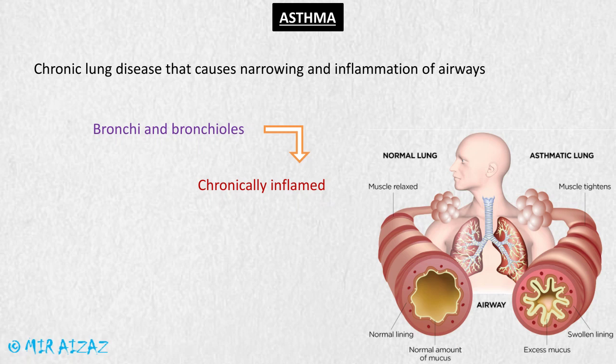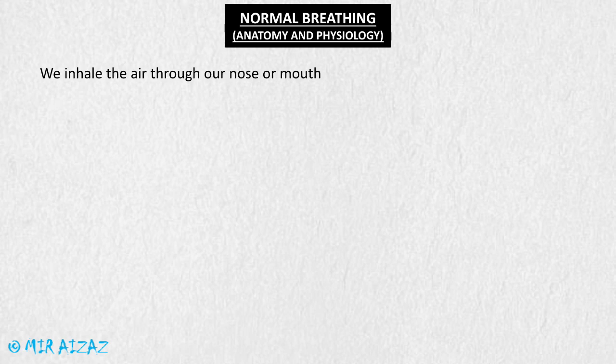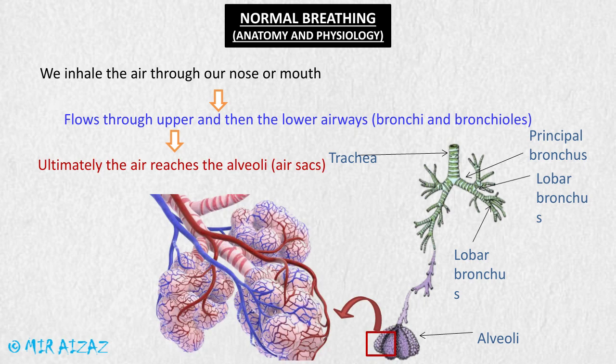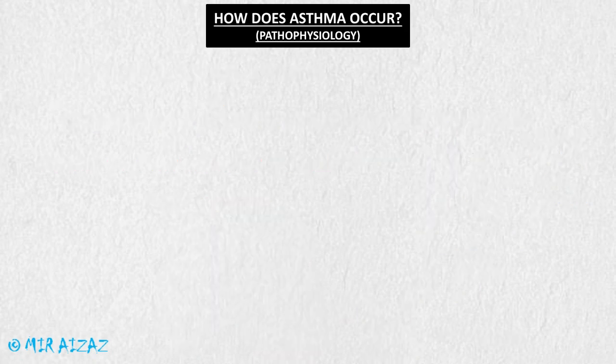This can make breathing difficult for the patient. In normal breathing, we inhale oxygen-rich gas through our mouth or nostrils, which passes through our upper and lower airways, the bronchi and bronchioles, and ultimately reaches the alveoli. The alveoli are the air sacs where the exchange of gases takes place — the blood acquires oxygen and gives off carbon dioxide, which is the process of oxygenation of the blood.